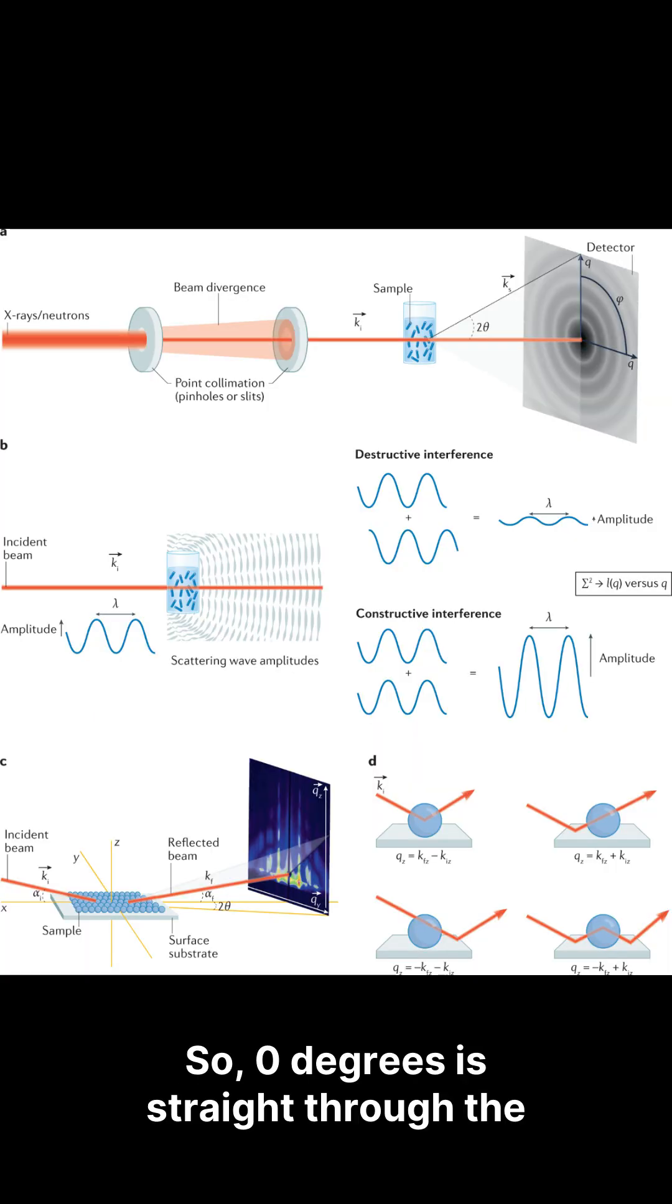So, zero degrees is straight through the beam. But the reported spin locking shows up at 90 degrees, which is side-scatter.